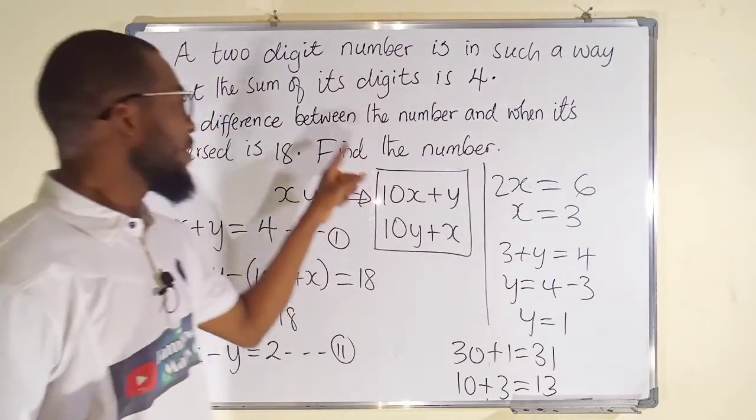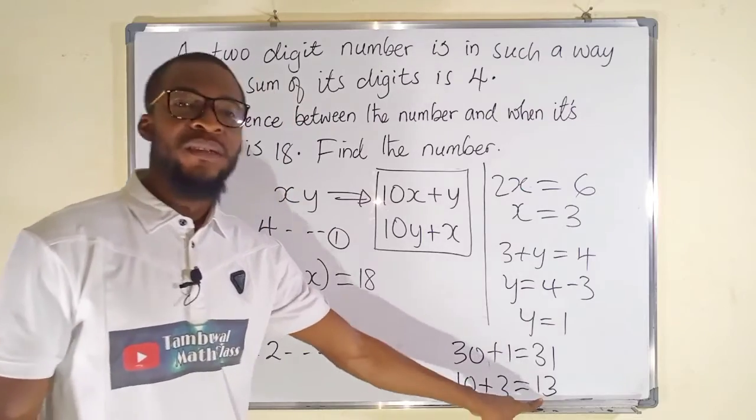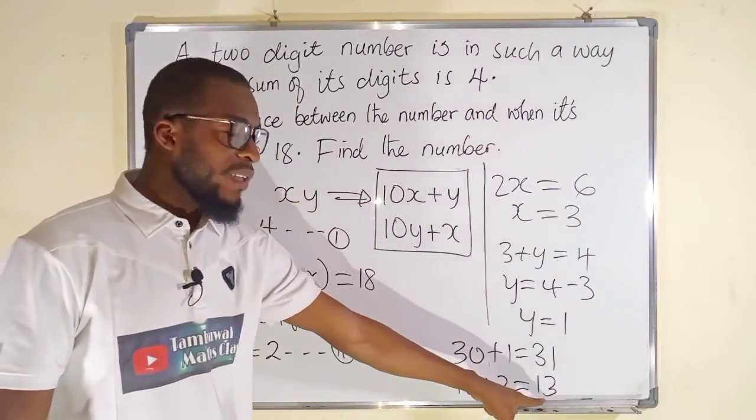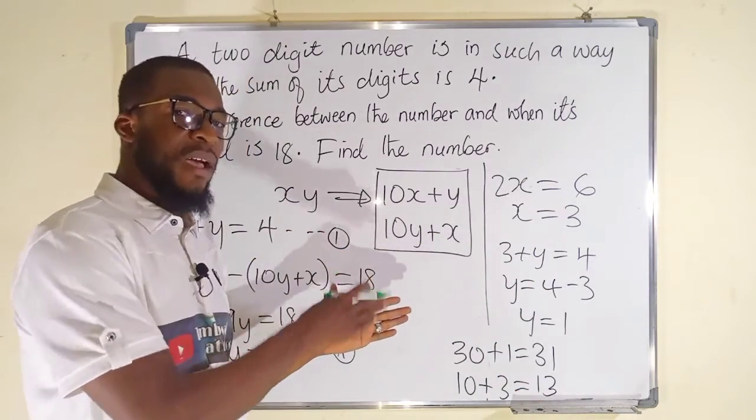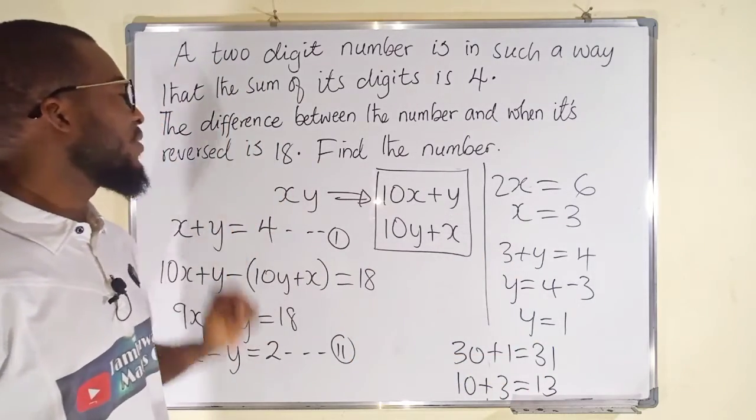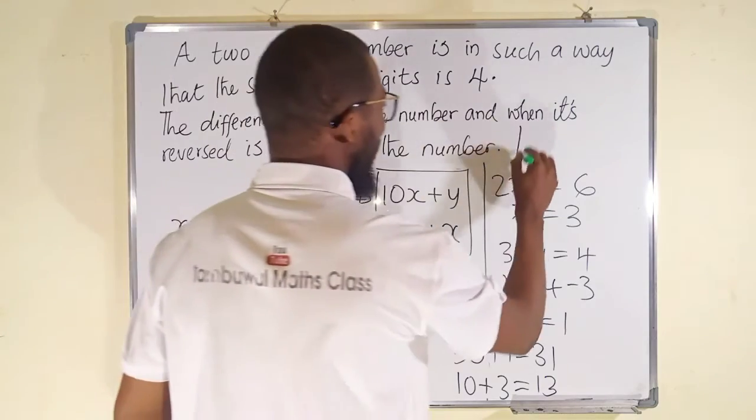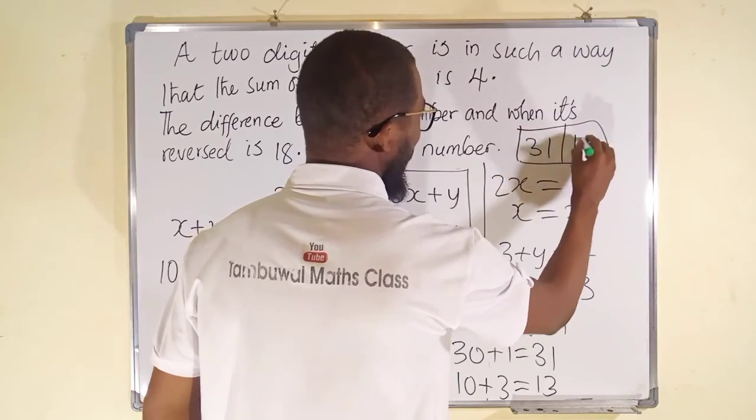And if you should consider 13, the reverse is 31, and the difference between the two numbers, you take the higher minus the lower, 31 minus 13 must give us 18. And hence we conclude that the required number we are looking for is either 31 or 13. Each of these numbers will satisfy this problem.